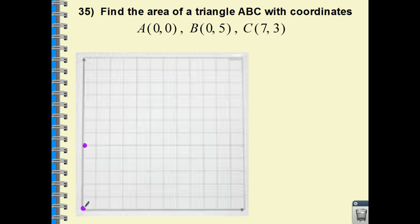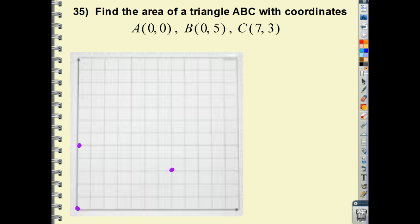My third vertex is going to be at 7, 3. So 1, 2, 3, 4, 5, 6, 7, and 1, 2, 3. I can draw my triangle. Let me get a quick line out here for you.